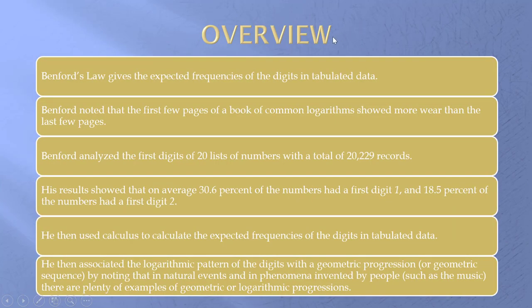The overview. The book talks about the history, how Benford noticed that the first few pages of his log tables were more worn, talks about the data that he analyzed, the results that he got, the fact that he used a little bit of calculus, and the fact that he gave some insights as to why he thought the digits in lists of numbers behaved this way.